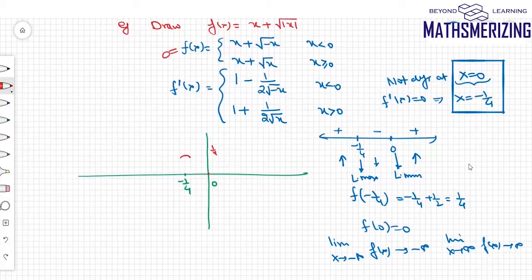If I'll put f(x) equals 0, I'll get x equals minus 1. So it'll pass through minus 1.